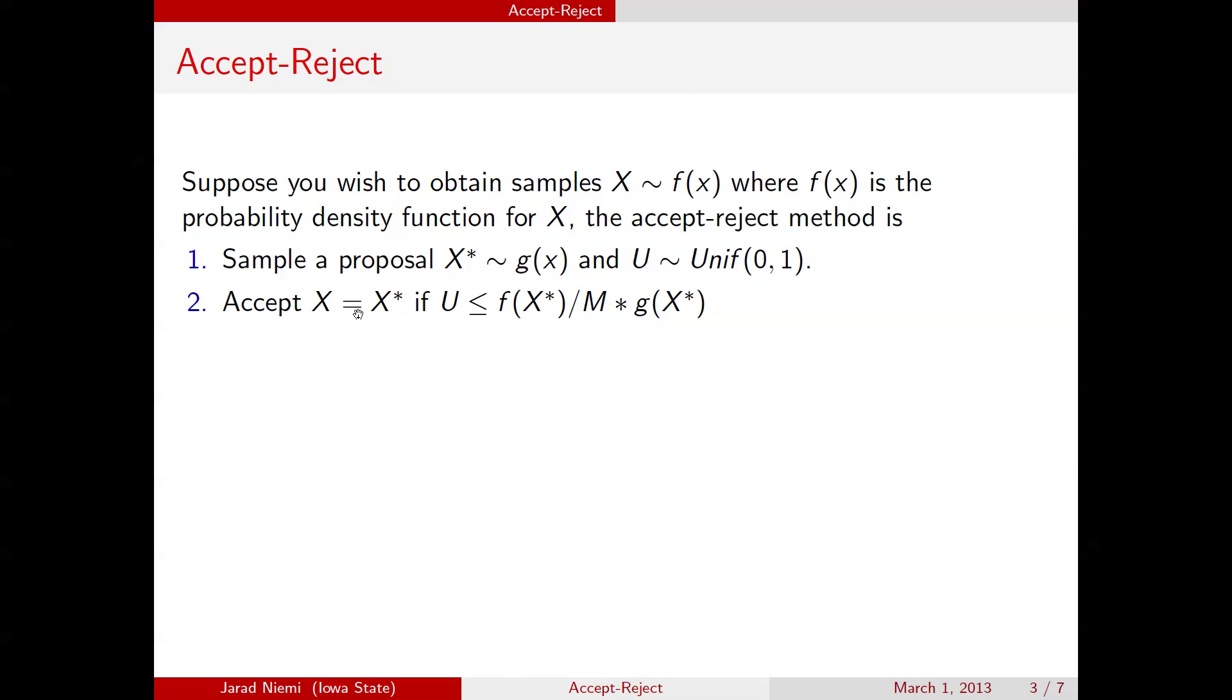So if it is, we accept that as a draw from f, and if it's not, then we have to return to 1 and repeat the whole procedure.